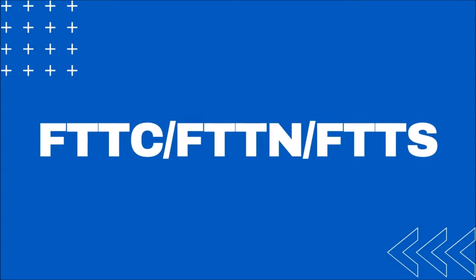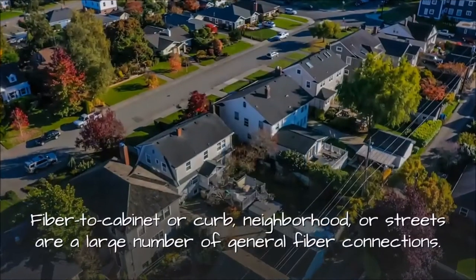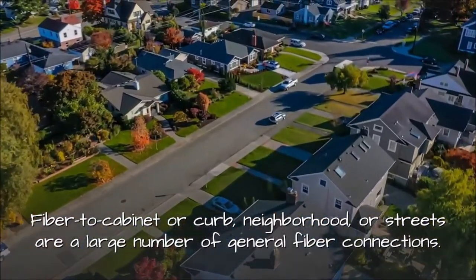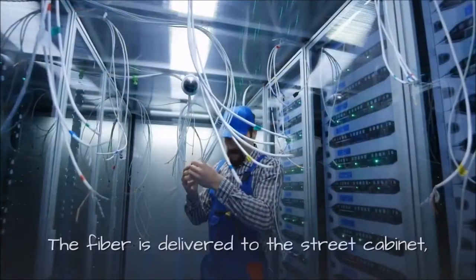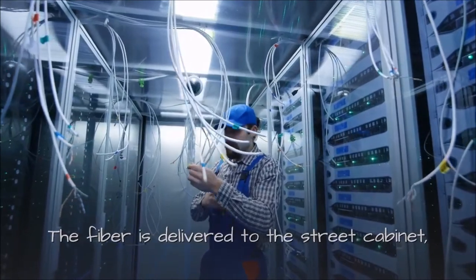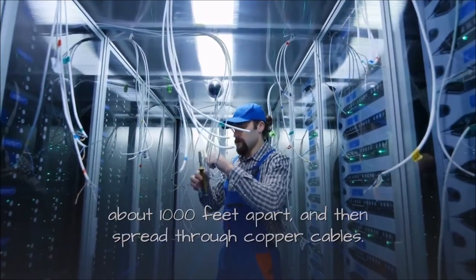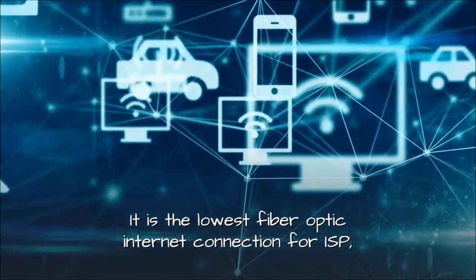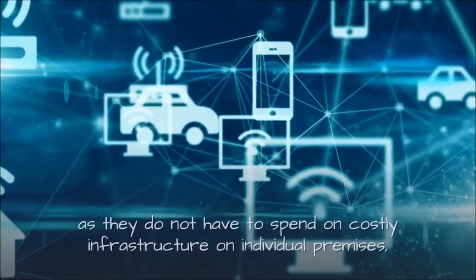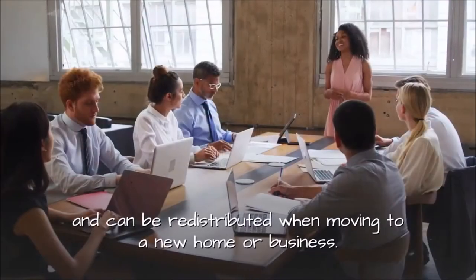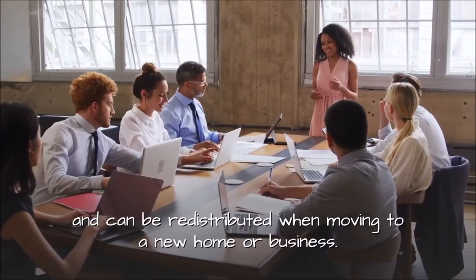FTTC, FTTN, FTTS: Fiber to cabinet or curb, neighborhood, or street are common fiber connections. The fiber is delivered to a street cabinet about 1,000 feet apart, and then distributed through copper cables. It is the lowest-cost fiber optic internet connection for ISPs, as they do not have to spend on costly infrastructure for individual premises, and can be redistributed when moving to a new home or business.